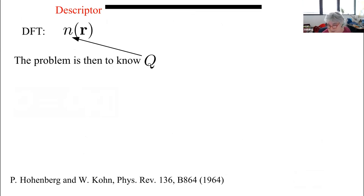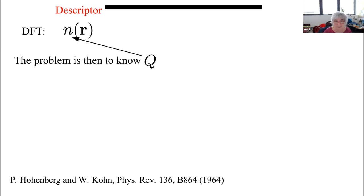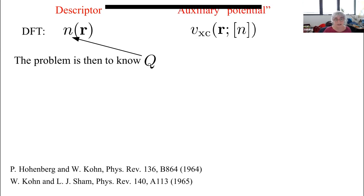The most well-known case is density functional theory. In DFT, the quantity Q that describes your system is simply the electronic density — a very simple object, just a function of space. The problem is of course you don't know the density. Kohn and Sham introduced a second idea: if you want to calculate the density, you can use an auxiliary system — a system simpler than the original, in this case without interaction — but where the potential has been tuned so that you get the density in principle exactly.